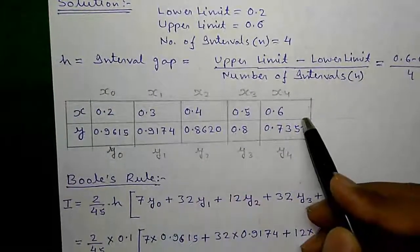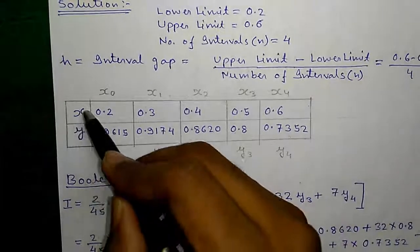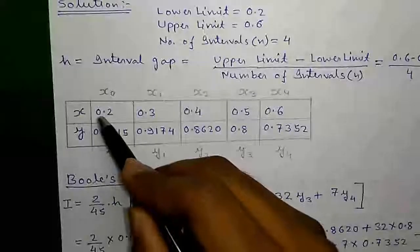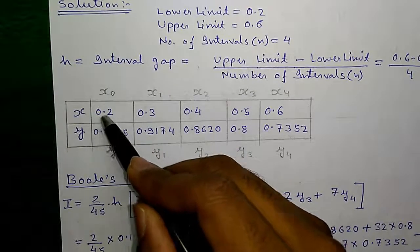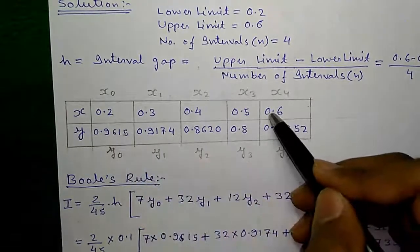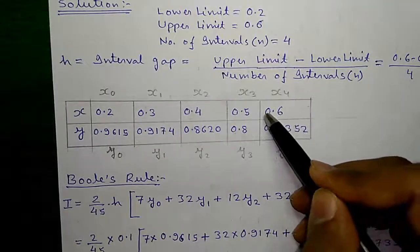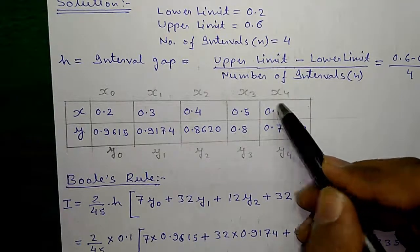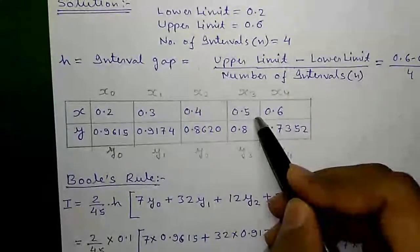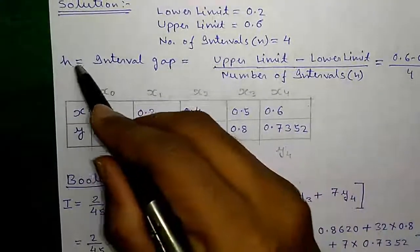Next, we will construct this table. It's very easy. First write x and y. We will start with the lower limit of x which is 0.2 and end at the upper limit of x which is 0.6 with the increment of 0.1, which is our interval gap.